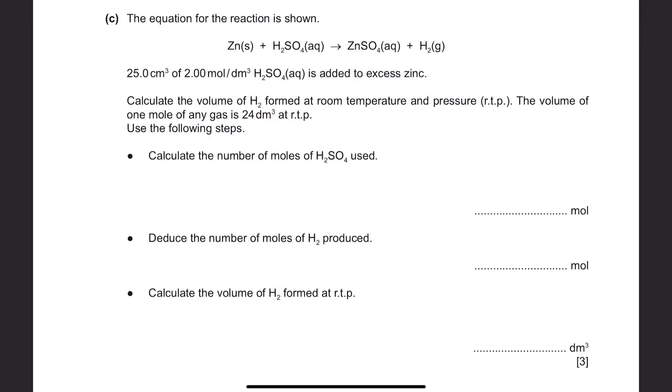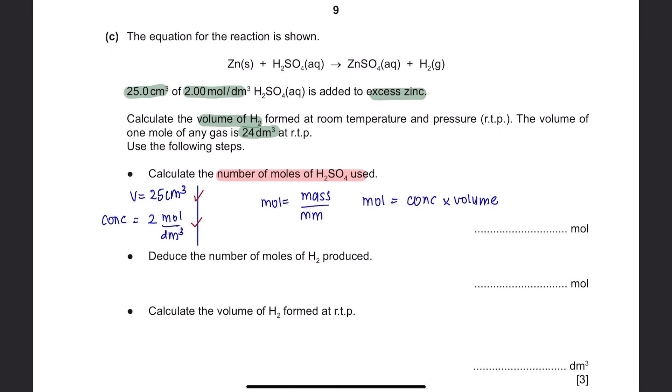Next, question C. The equation for the reaction is shown. 25 cm³ of 2 mol dm⁻³ sulfuric acid is added to excess zinc. Calculate the volume of hydrogen formed at room temperature and pressure. The volume of 1 mol of any gas is 24 dm³ at RTP. Use the following steps. The first step is to calculate the number of mols of sulfuric acid used. Let's first identify the values given for sulfuric acid. You have been given the volume and the concentration. There are only two formulas related to calculating mols. Since we are given the volume and concentration, the formula that we are going to apply is this. The concentration given is 2 mol per dm³ and the volume given is 25 cm³. But you have to convert this into dm³ by dividing 1000, giving you 0.025 dm³. After calculating the mol, you will get a value of 0.05 mol.